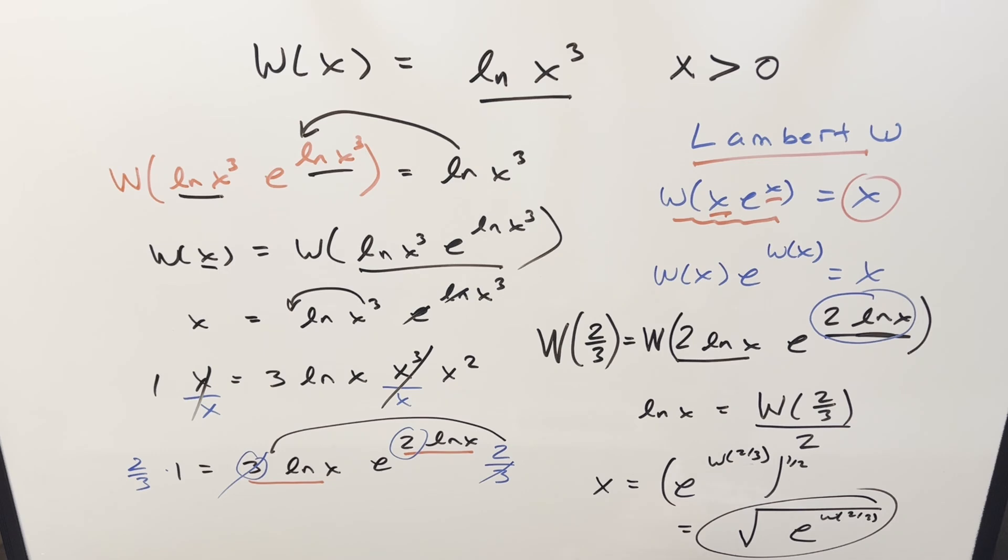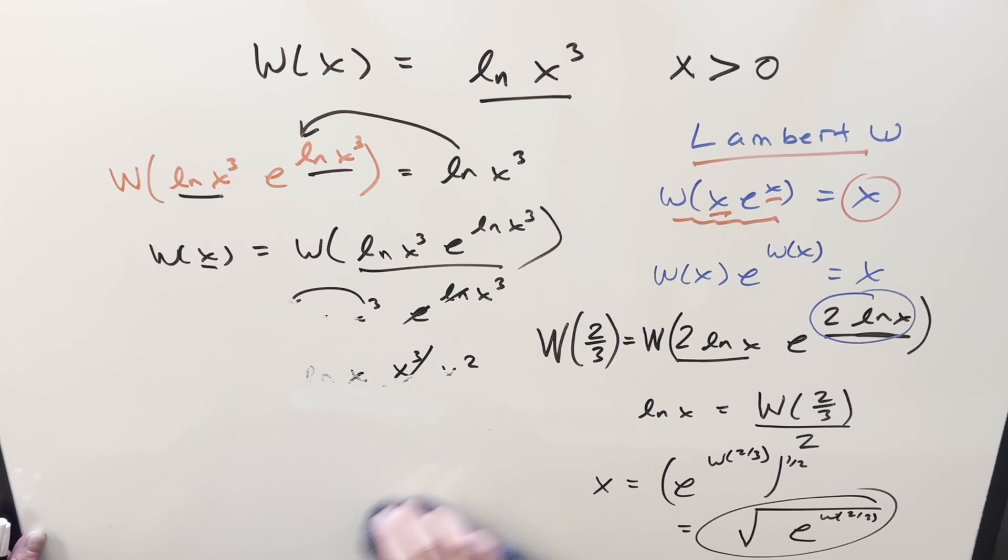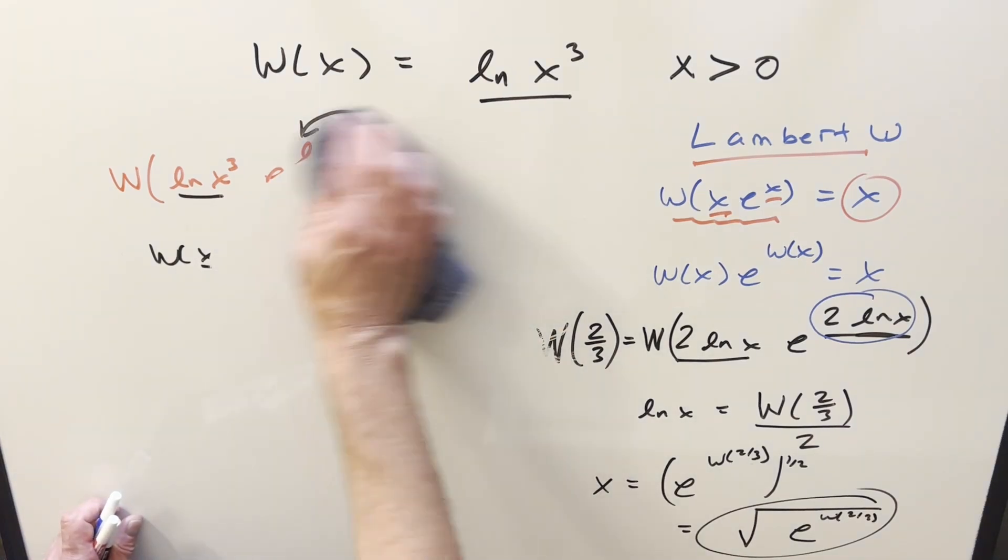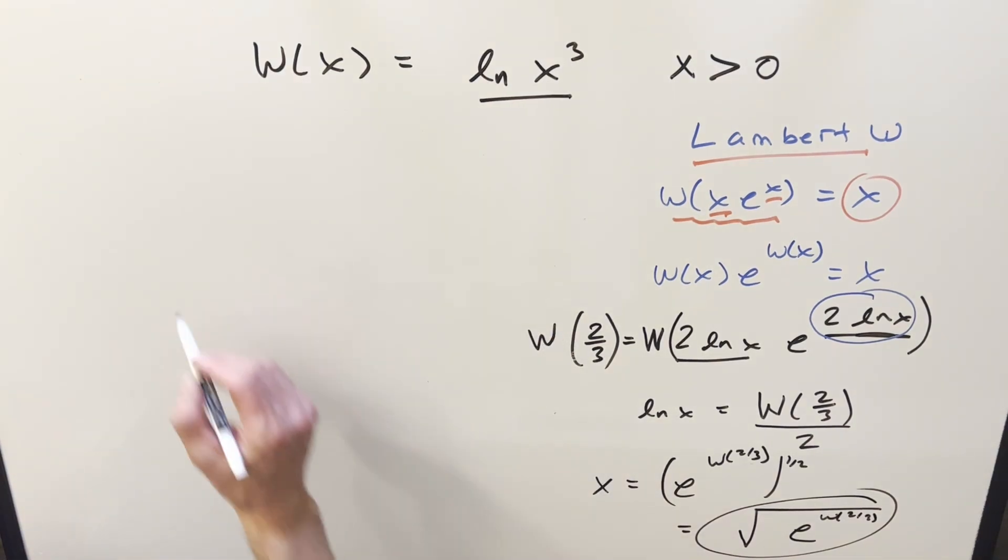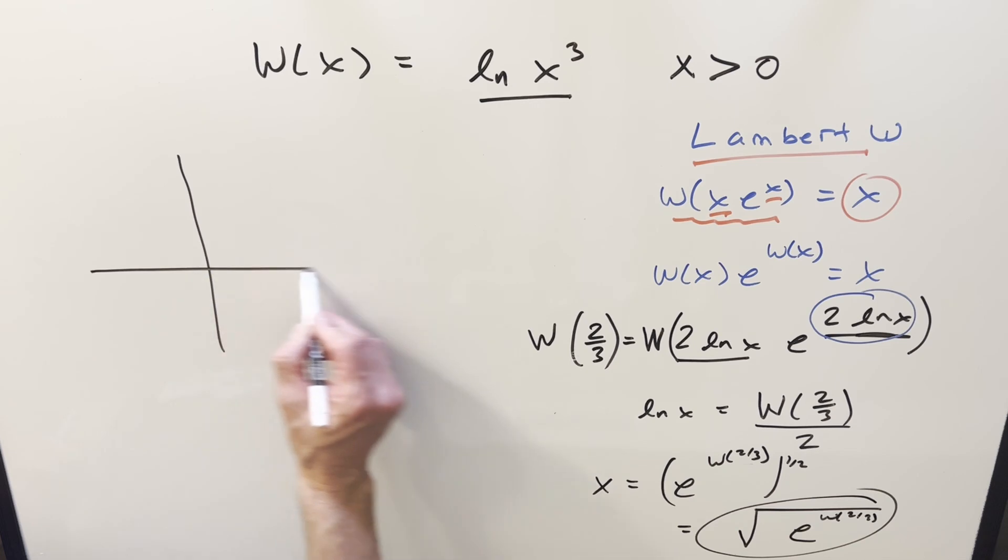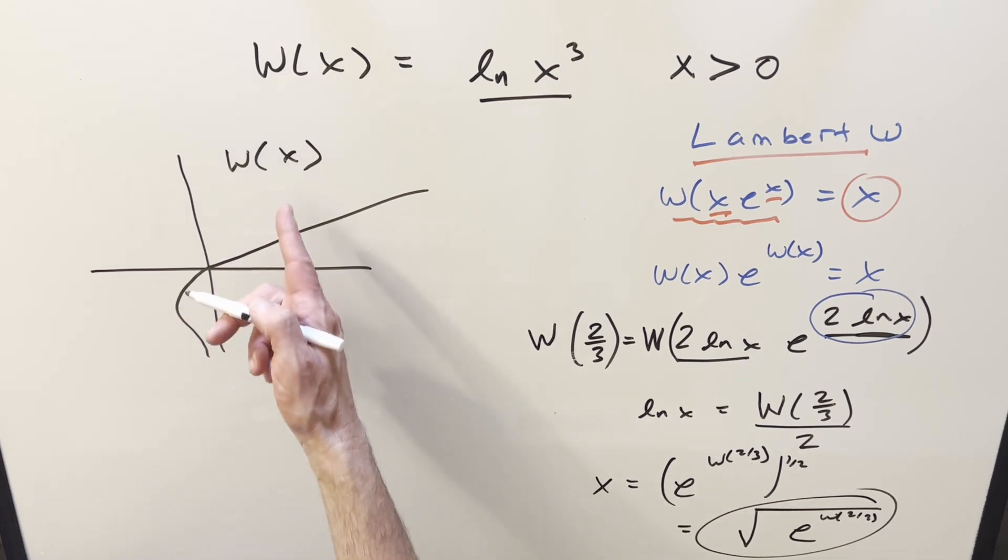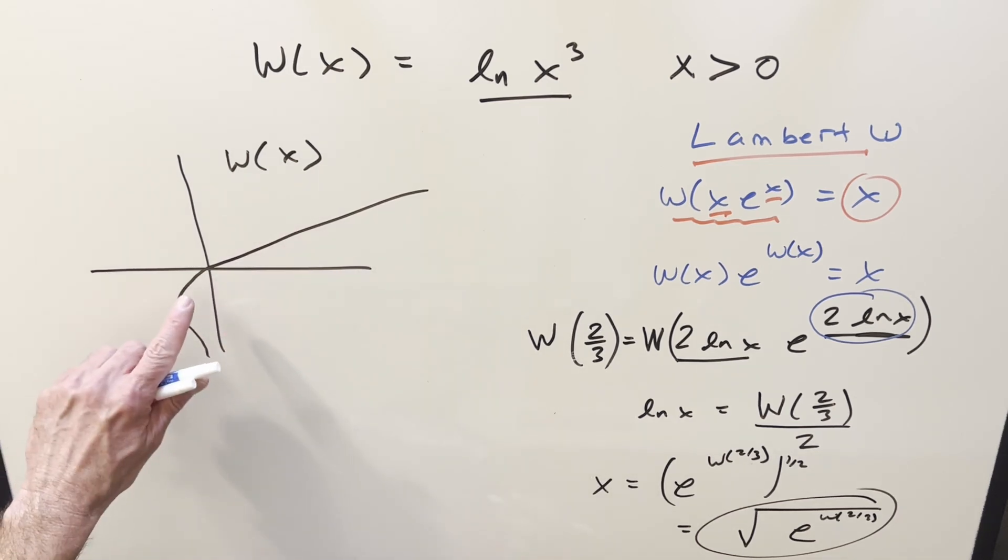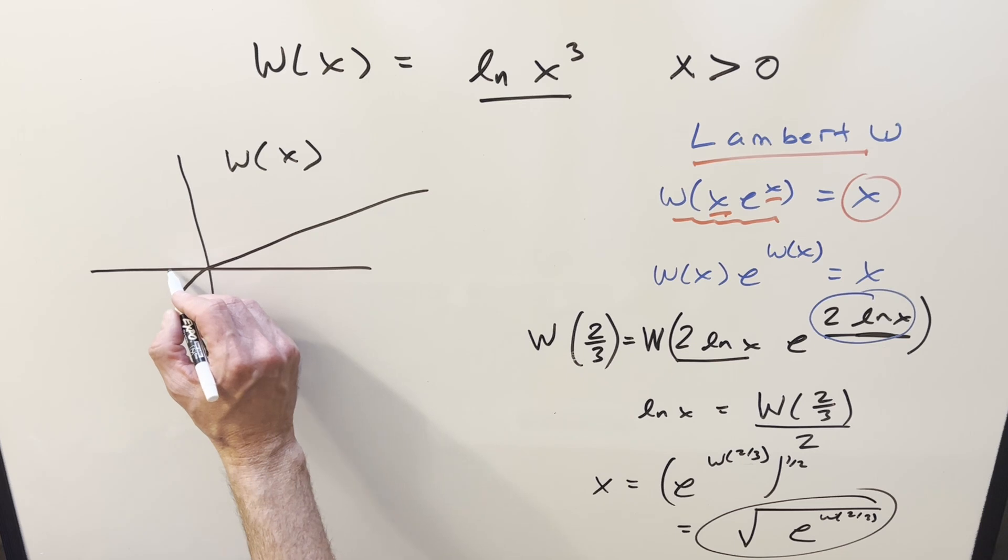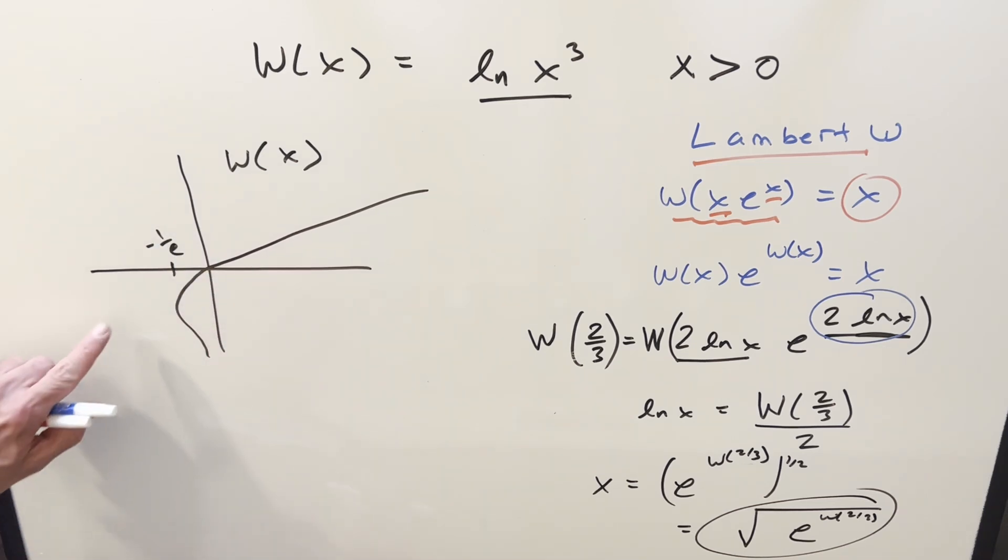So then from here, the only question on this is, what is this as a decimal value, and are there multiple solutions? Well, let me deal with multiple solutions really quick. The multiple solutions is going to be easy to answer just looking at a graph, a very rough graph of the Lambert W, which looks something like this. We can just evaluate this based on where our x values are.